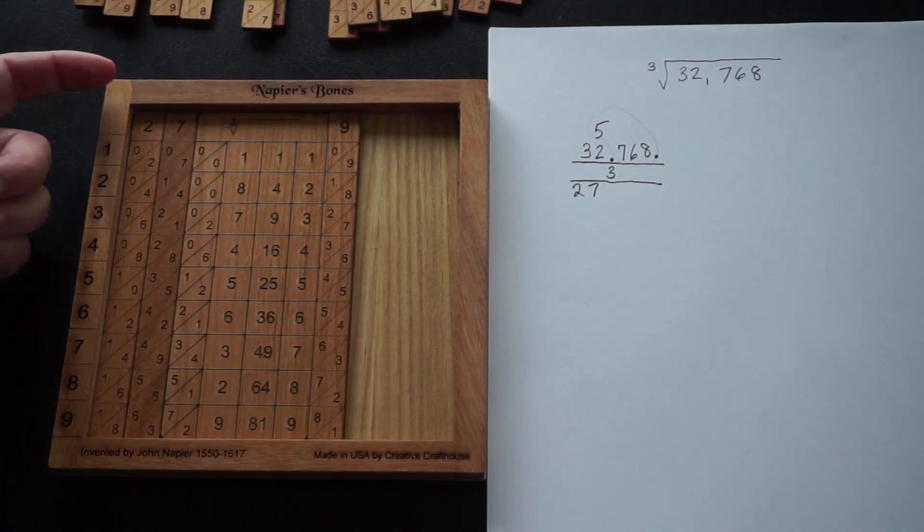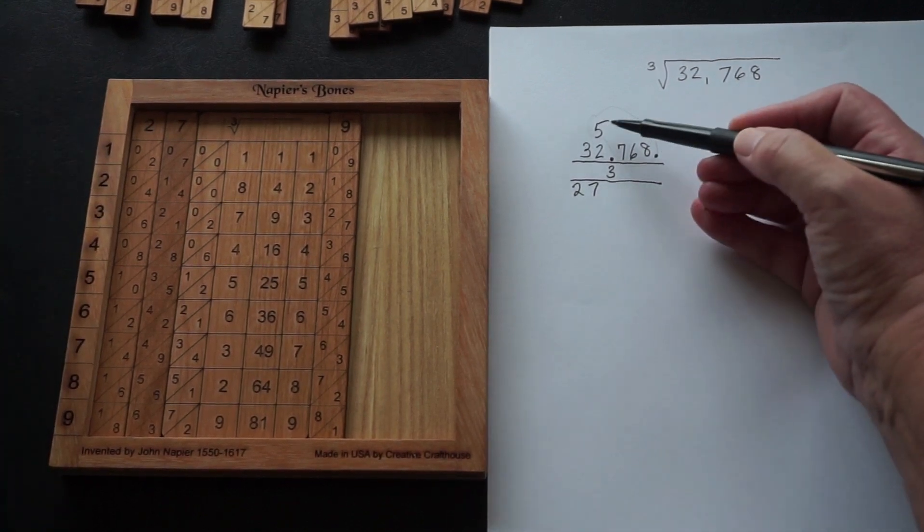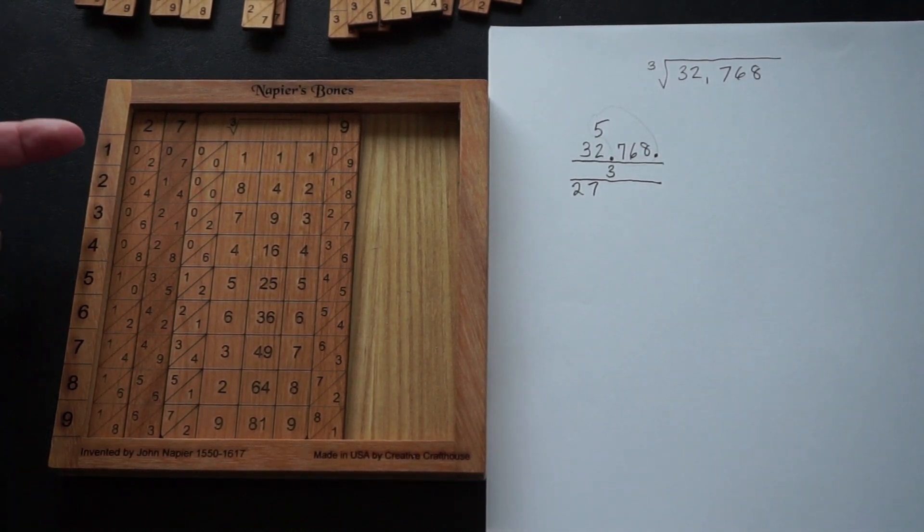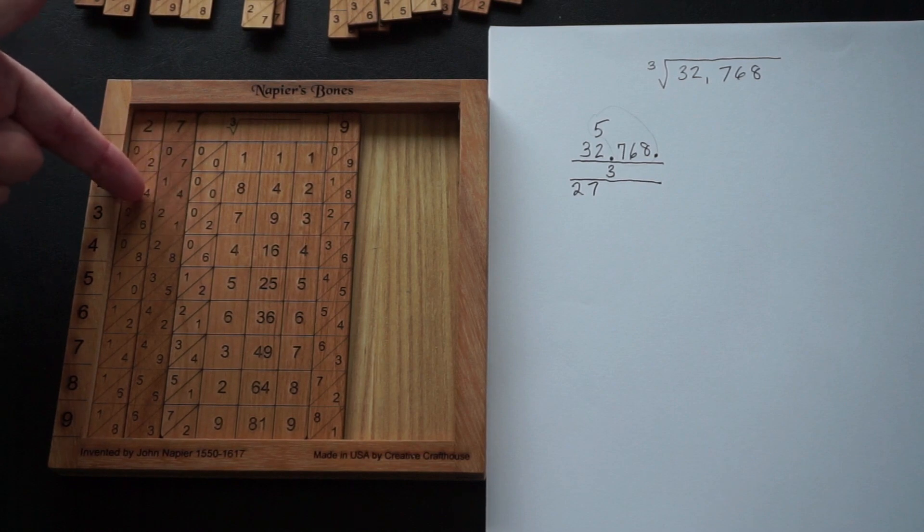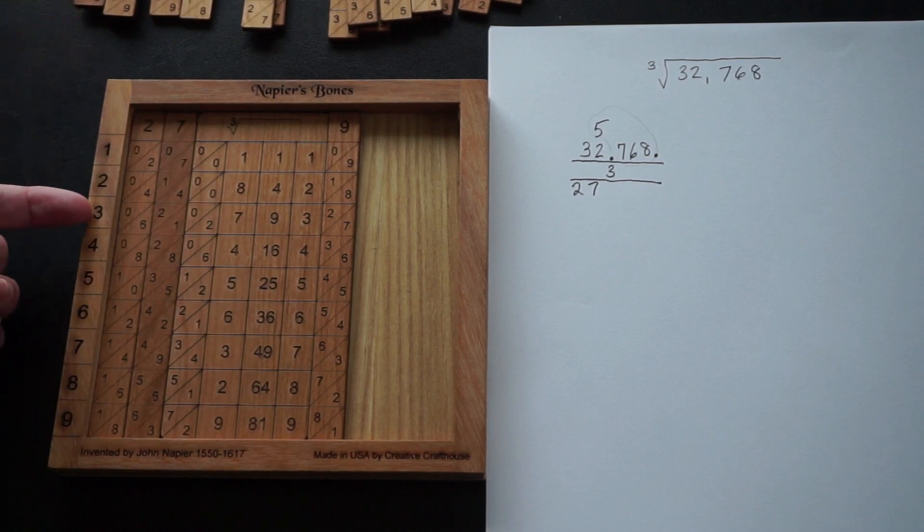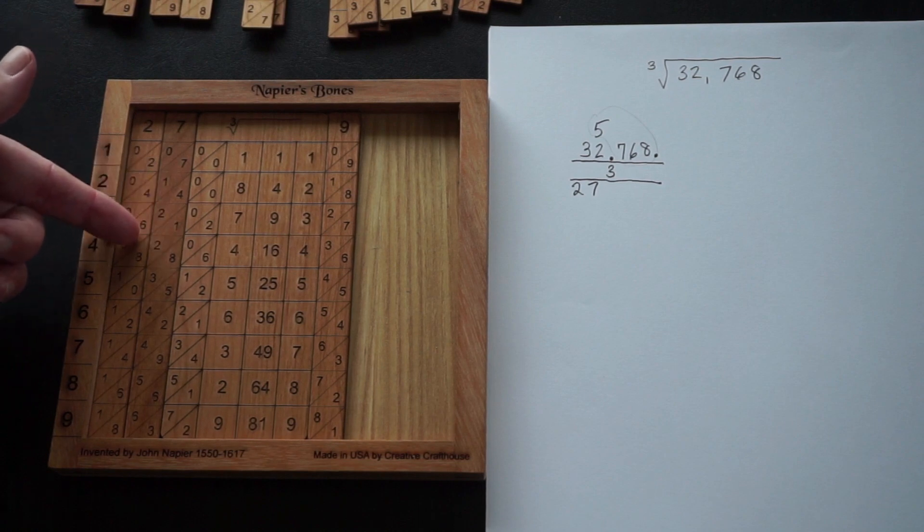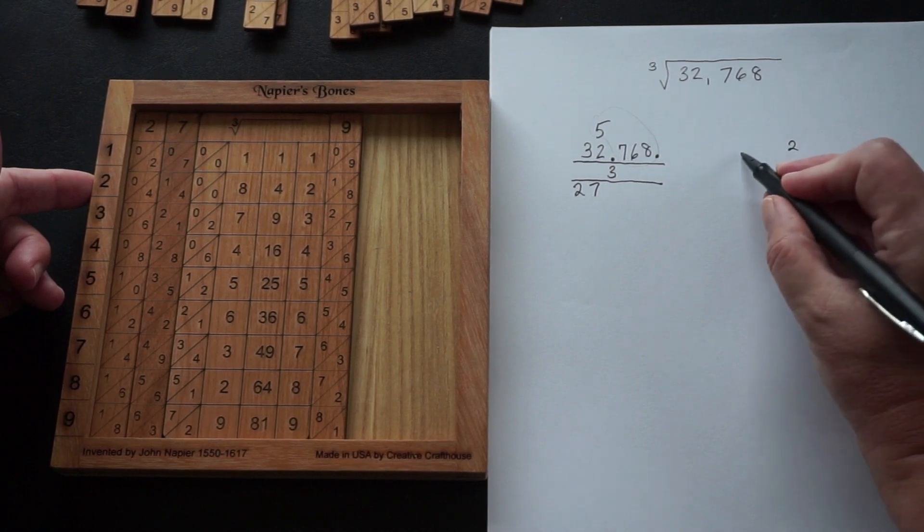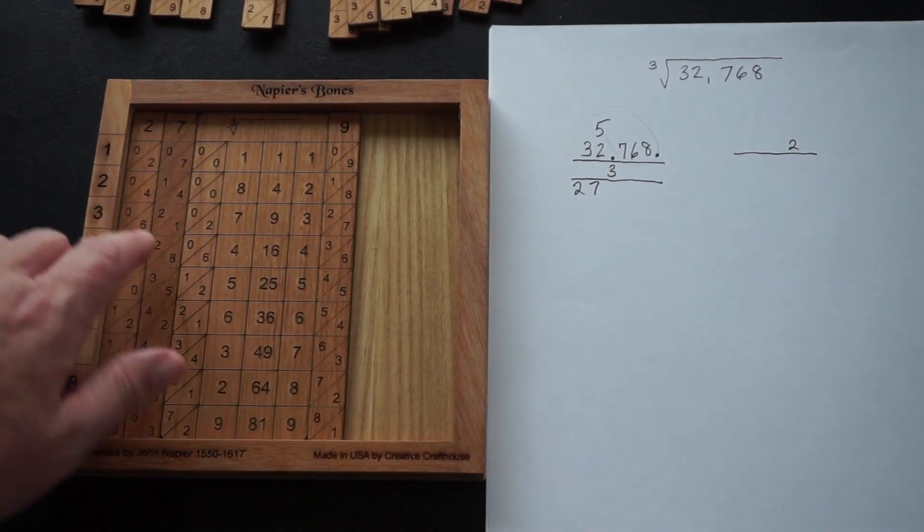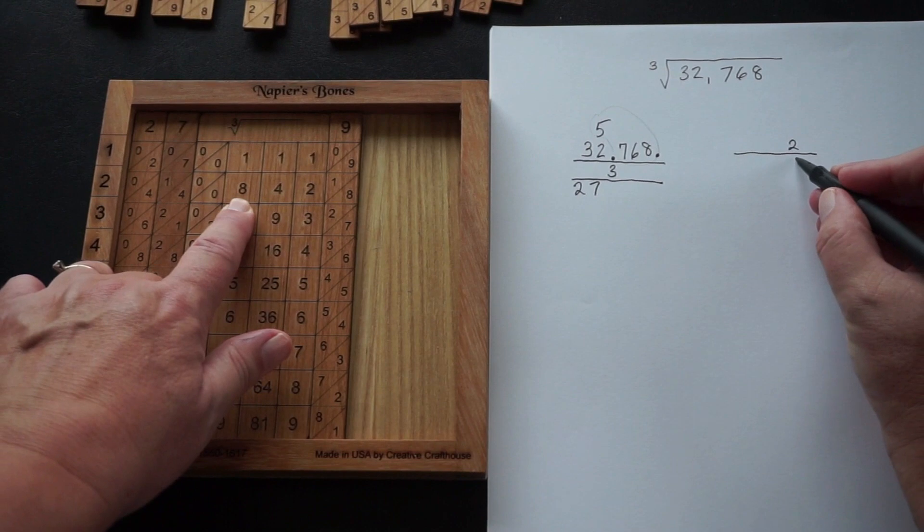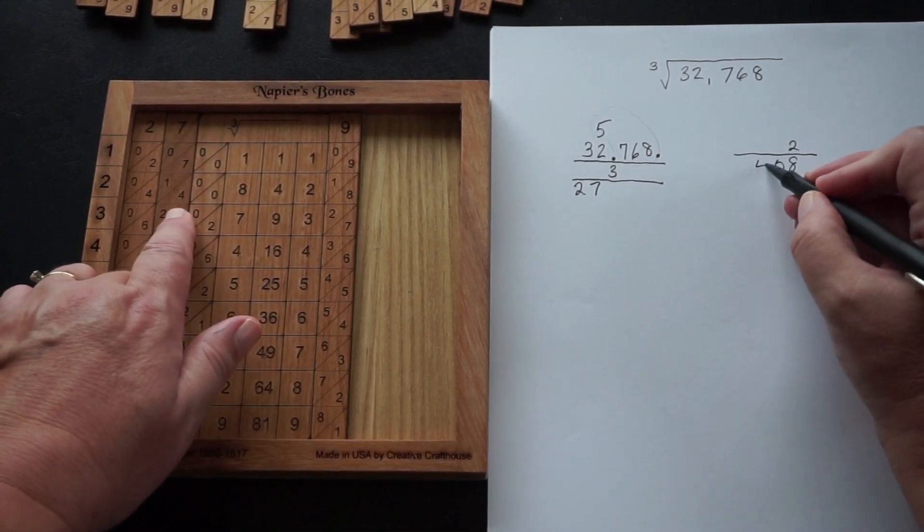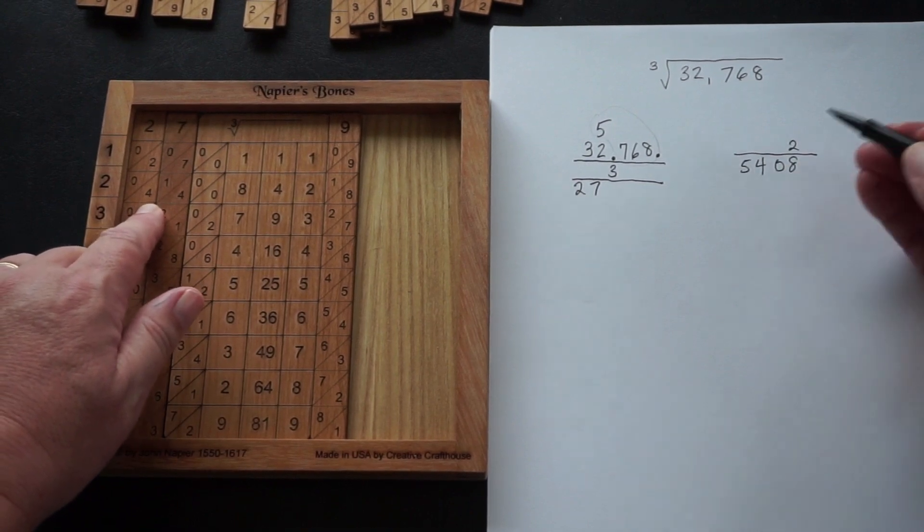So I'm looking over here for what is closest to 5768 without going over. I see in the second row I've got one plus four is five. We're in the 5,000s. It's 5,400-something. But in the third row I have 8,000. So that's too big. We're going to go with row two, which gives us, in the ones place we have an eight, tens place we have a zero, hundreds place we have a four, thousands place we have one plus four, which is five.